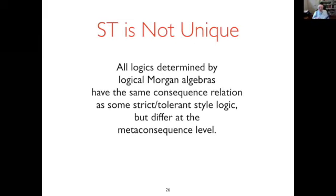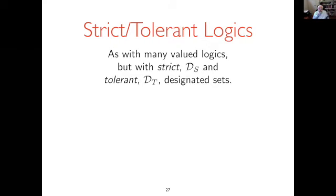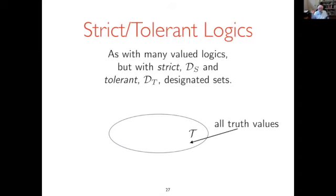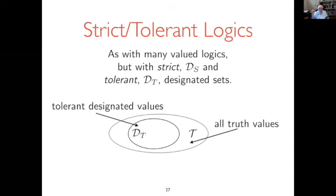All logics determined by logical Morgan algebras have the same consequence relation as some strict tolerant logic, but they differ at the meta-consequence level. So the strict tolerant case is really part of a very broad family. I also need to specify exactly how I'm formulating strict tolerant logics: the underlying structure is a lattice of truth values — same bounded lattice as before — but there'll be a strict and a tolerant set of designated truth values.